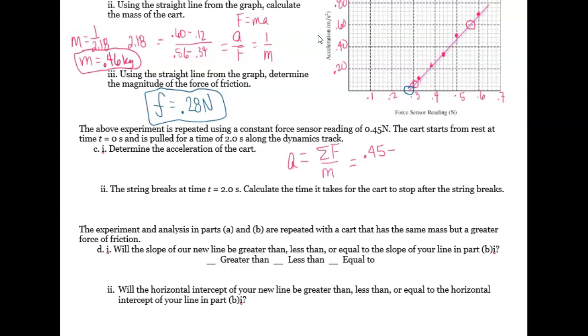That's going to be 0.45 newtons. We're going to subtract our friction from that 0.28 newtons. And we're going to use the mass that we got in the problem up above, which is 0.46 kilograms. And now when you're doing this, use what you get in the equation above. So as long as you use what you got up above, even if it's not correct, you should still get full credit for it. This is going to give me 0.37 meters per second squared.